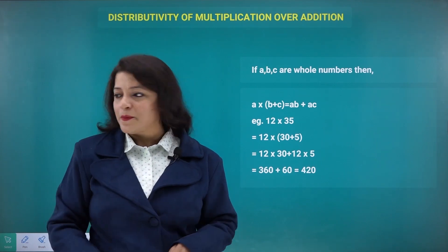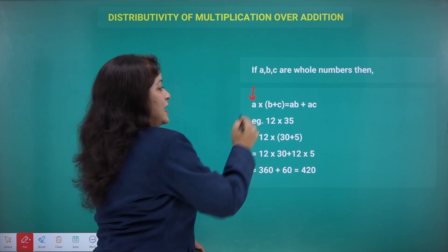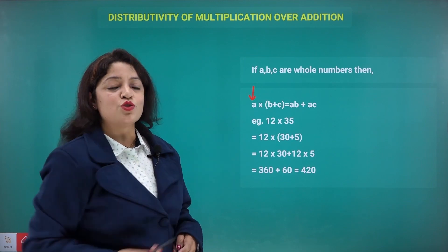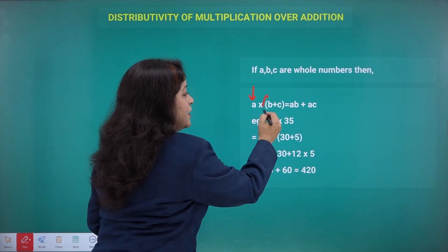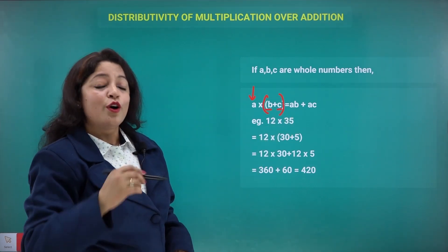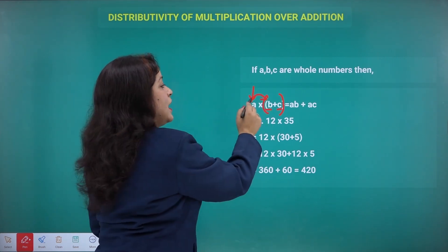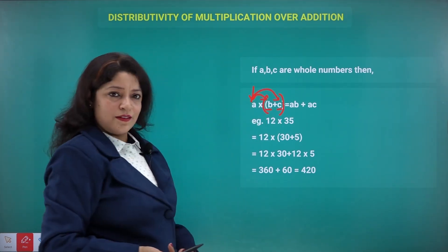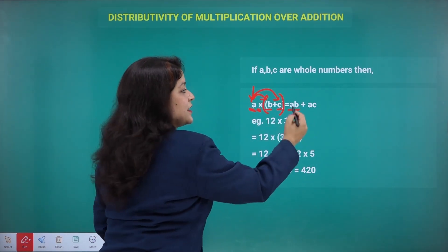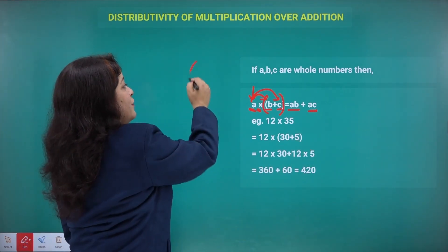If a, b, c are three whole numbers, then a times (b + c) equals a×b plus a×c. To make it simple: suppose it's A's birthday and A went to class to distribute chocolate. A's brother and cousin are both in the same class, so A will distribute chocolate to the brother as well as to the cousin — that means A is multiplied by b as well as by c.